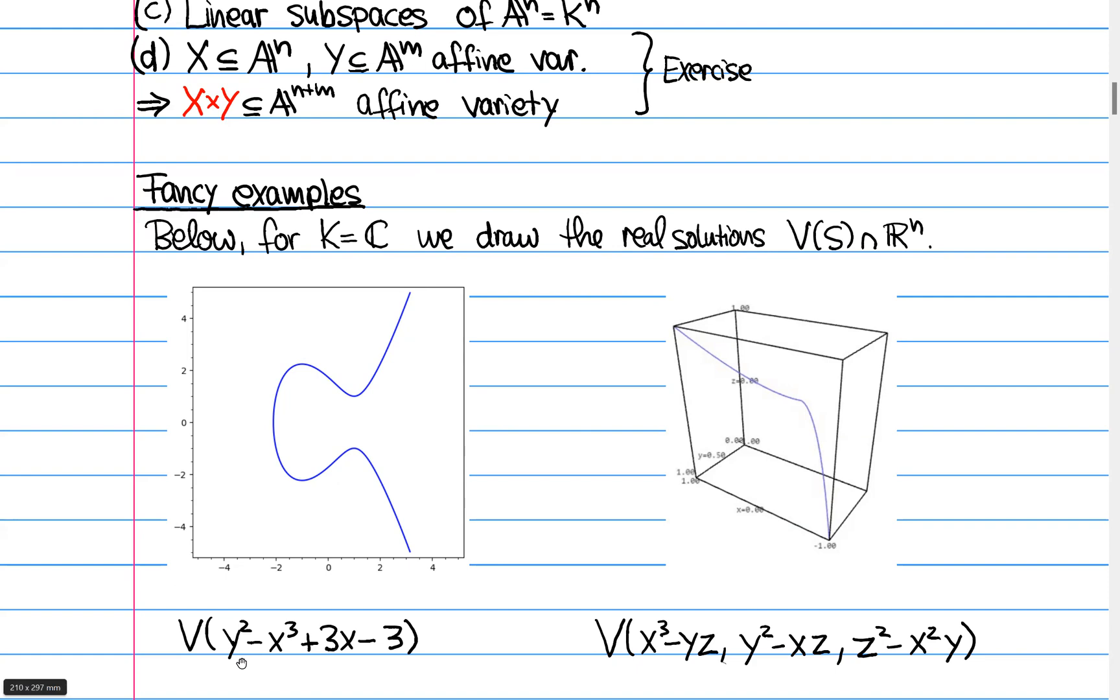And so here, if you take the equation y squared minus x to the three plus three x minus three, then you can, so you see two variables x and y. So we have an ambient two dimensional space. And then the solution set is a very nice, smooth curve like this.